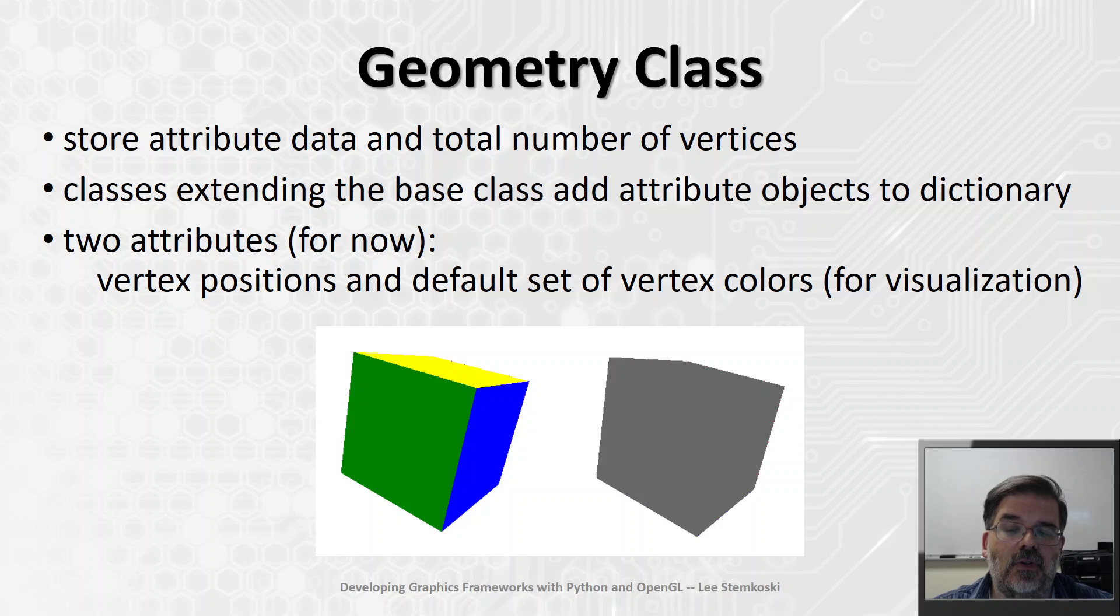For now, there's going to be two different types of attributes we'll work with. The first will be vertex positions. Every vertex shader needs to know where the vertices are going to be. The other attribute will be vertex colors, and that's going to be so we can visualize what these shapes look like.